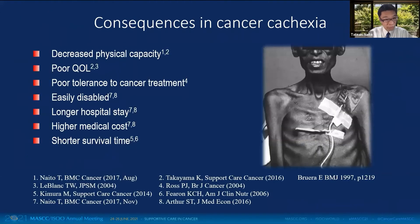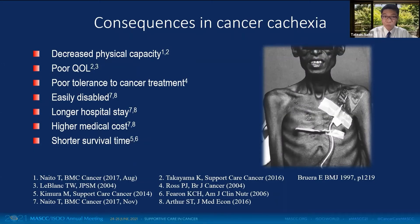Not only that, cachexia cancer patients have decreased physical capacity, poor quality of life, and low tolerance to cancer treatment. As a result, they are easily disabled, stay longer in the hospital, require higher medical costs, and live shorter lives.